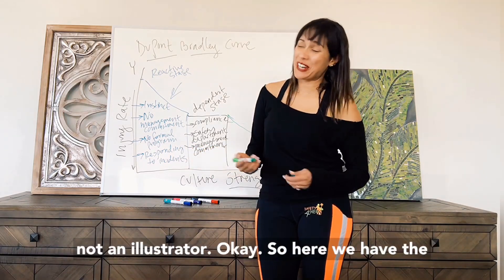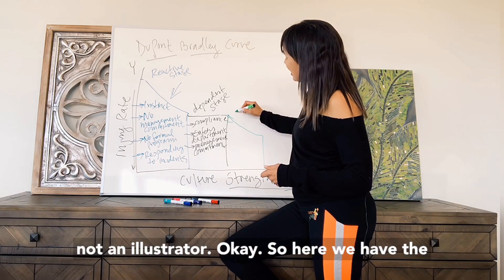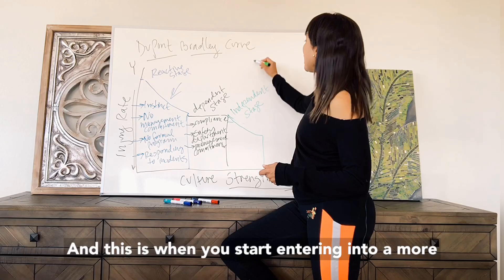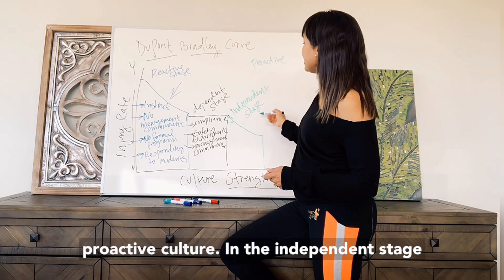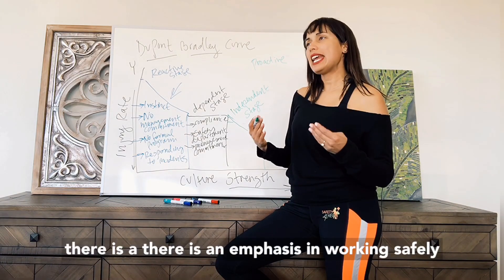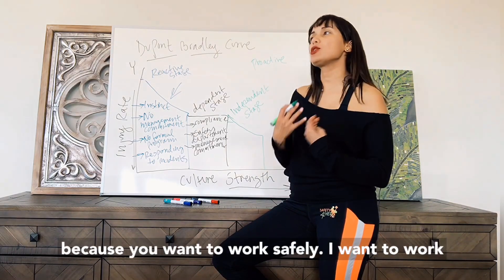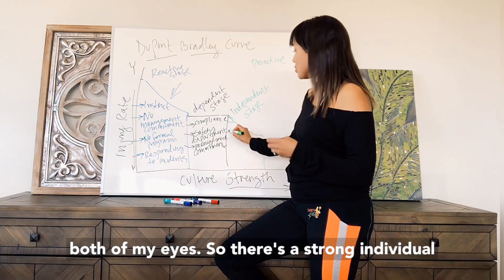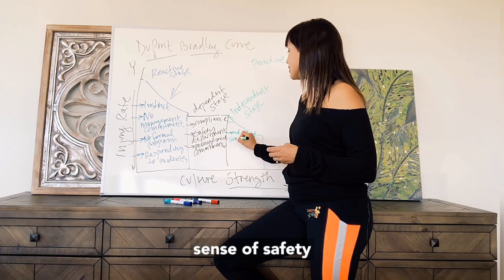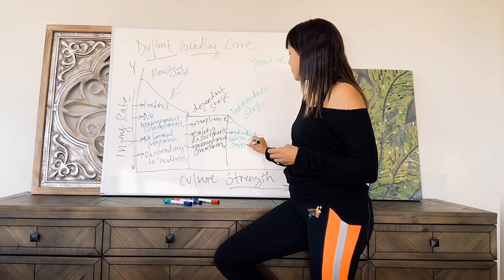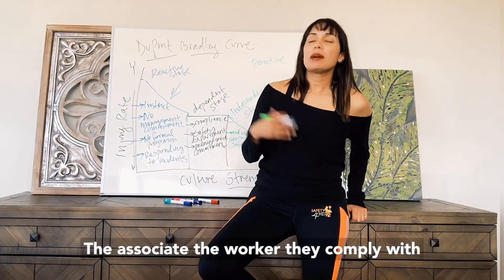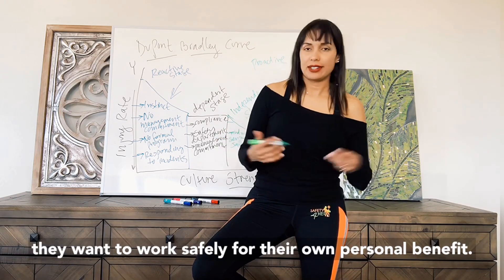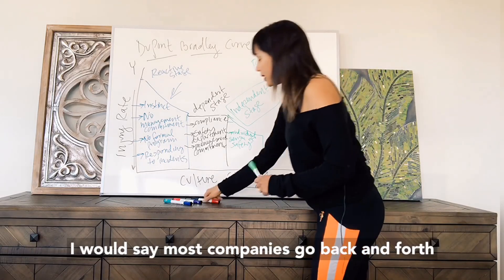From the dependent stage we move to the independent stage. This is when you start entering into a more proactive culture. In the independent stage there is an emphasis on working safely because you want to work safely — I want to work safely because I want to go back home to my family, I want to have all of my fingers, all of my toes, both of my eyes. The worker complies with safety not just because of a compliance requirement, but because they want to work safely for their own personal benefit. Most companies go back and forth between the dependent and independent stages.